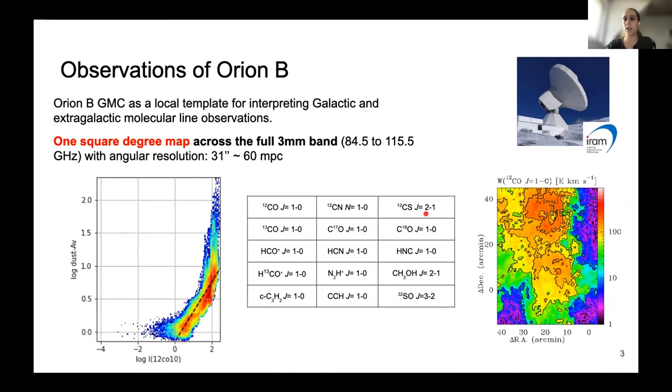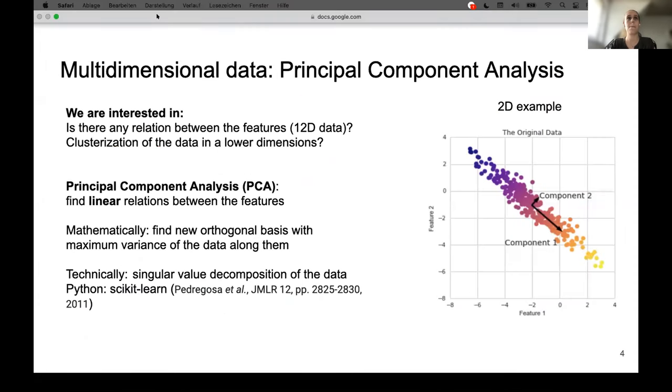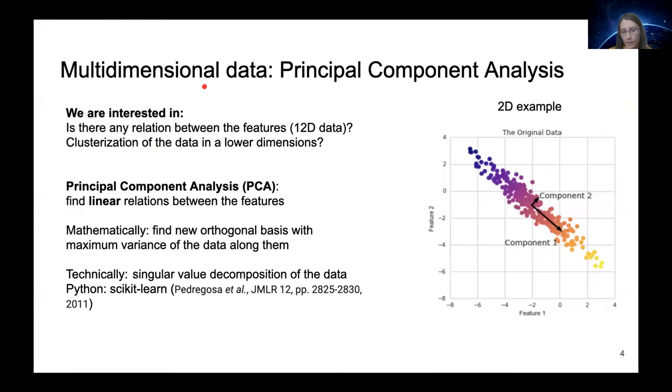So the idea is to use not just one line but several lines, for example this here. And from all of them get together a better picture and create somehow a linear dependency to calculate the column density in the end.